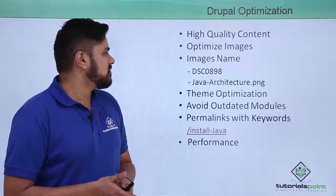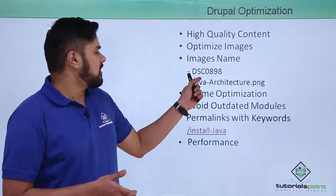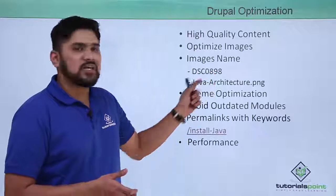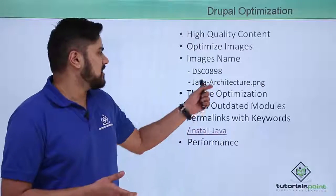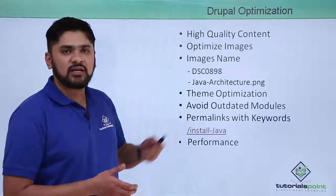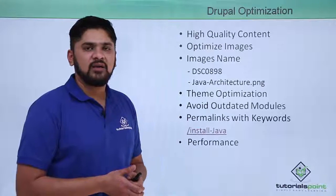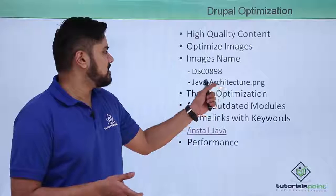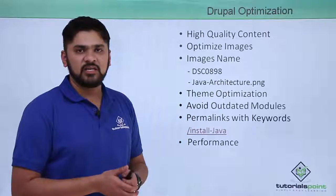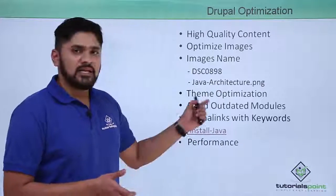Here you can see the next point is image names. Always remember writing the image name like the first one is incorrect and the second one is correct because in the second one you can easily find keywords. If you are creating an article on Java architecture or on Java and if the image is about architecture, you can write Java-architecture as the name of the image file with any extension.